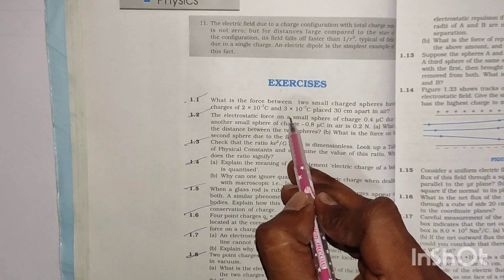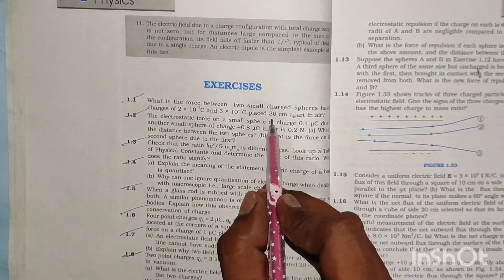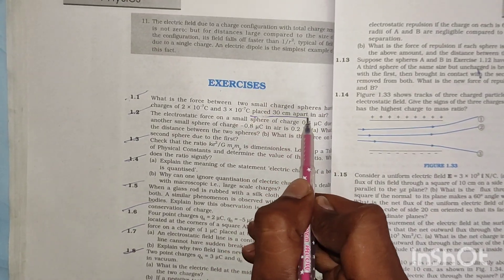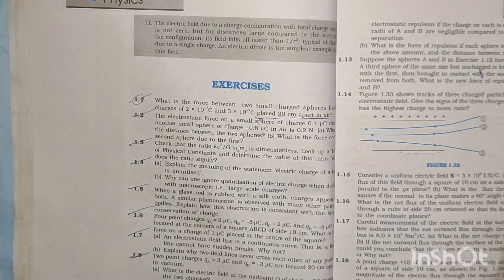Hello students, welcome to Physics World channel. Here's a problem: What is the force between two small charged spheres having charges of 2×10^-7 and 3×10^-7 Coulomb placed 30 centimeters apart in air? This is the first numerical.